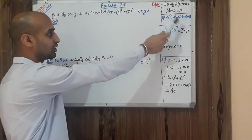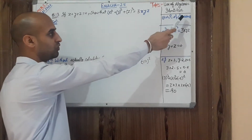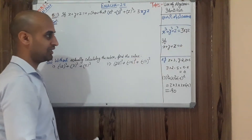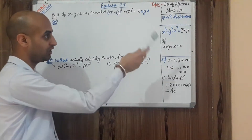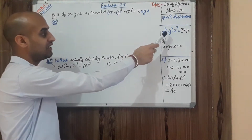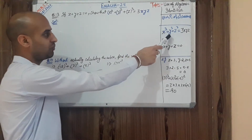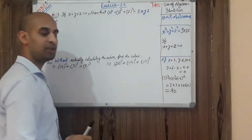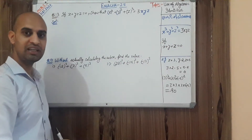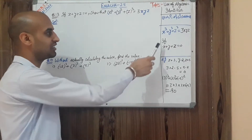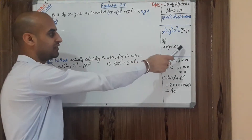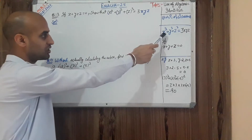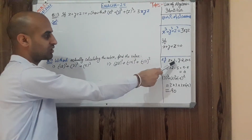So (a+b)³ = a³ + b³ + 3ab(a+b), which you have already studied. Now, the new thing you are going to study is: x³ + y³ + z³ = 3xyz. But there is a condition — this holds only if x + y + z = 0.